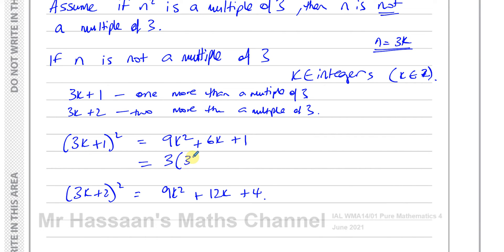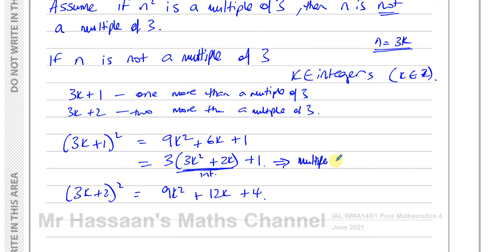From (3k + 1)² = 9k² + 6k + 1, we factor out 3 from the first two terms: = 3(3k² + 2k) + 1. Since k is an integer, 3k² + 2k is an integer, so this equals 3 × (an integer) + 1, which is one more than a multiple of three — therefore NOT a multiple of three.